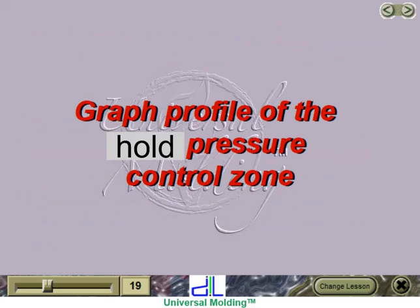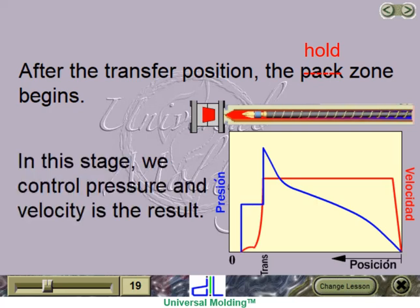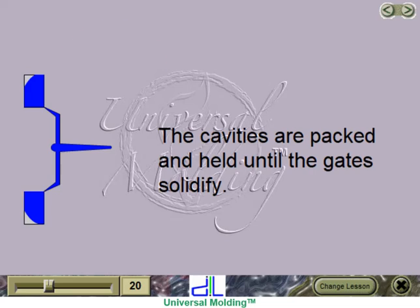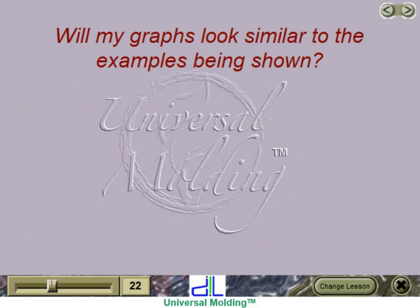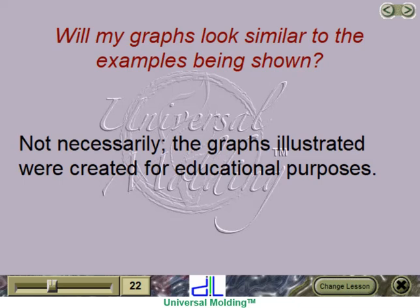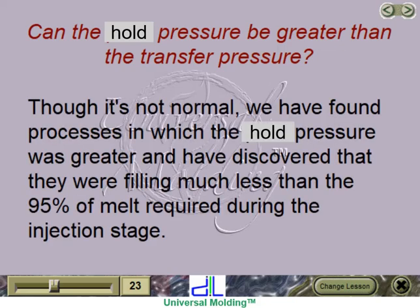After the transfer position, the pack zone begins. In this stage, we control pressure and velocity is the result. The cavities are packed and held until the gates solidify. The graph clearly illustrates that the pressure is being controlled and that the velocity, though minimum, will show some movement. The graphs illustrated were created for educational purposes, so your graphs may not look identical. Though it's not normal, pack pressure can be greater than transfer pressure when processes are filling much less than the 95% of melt required during the injection stage.